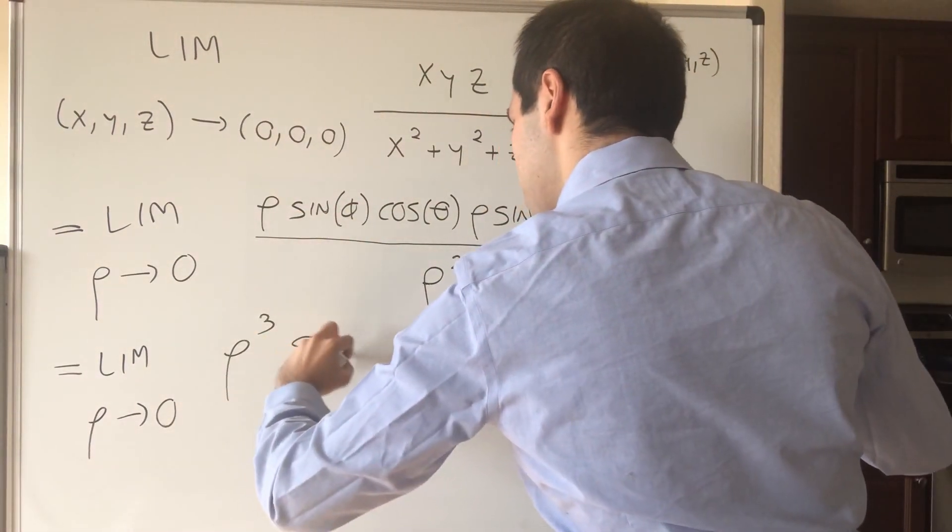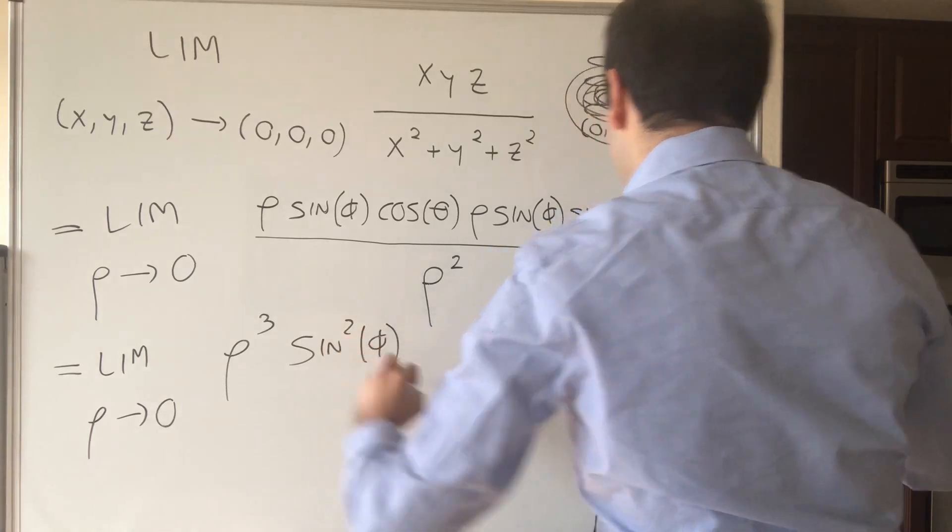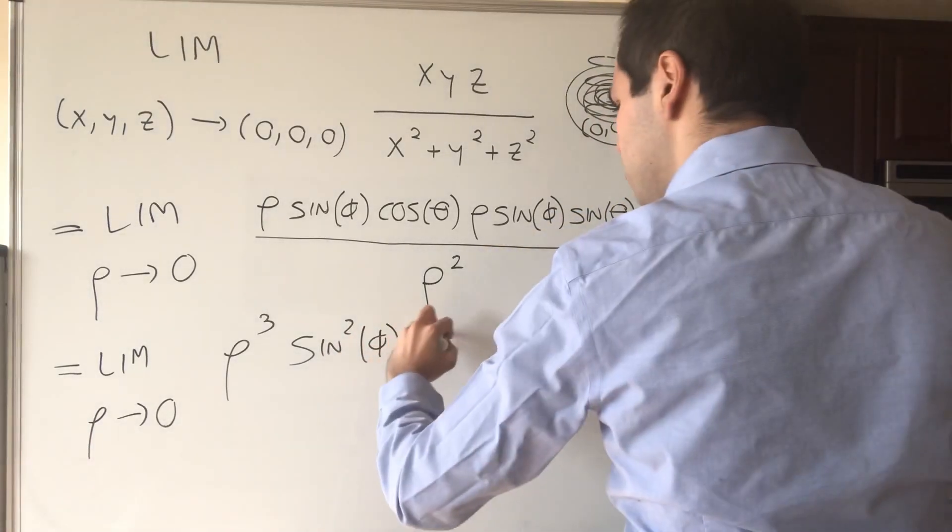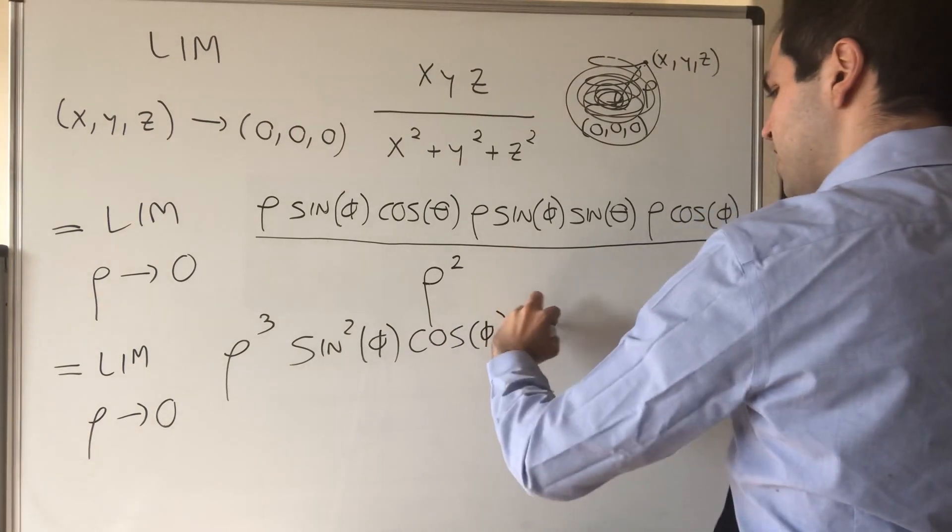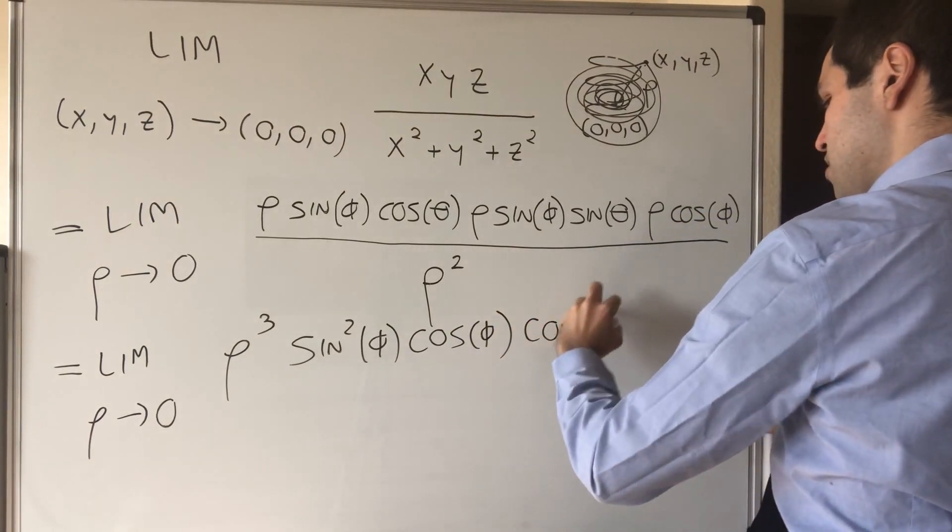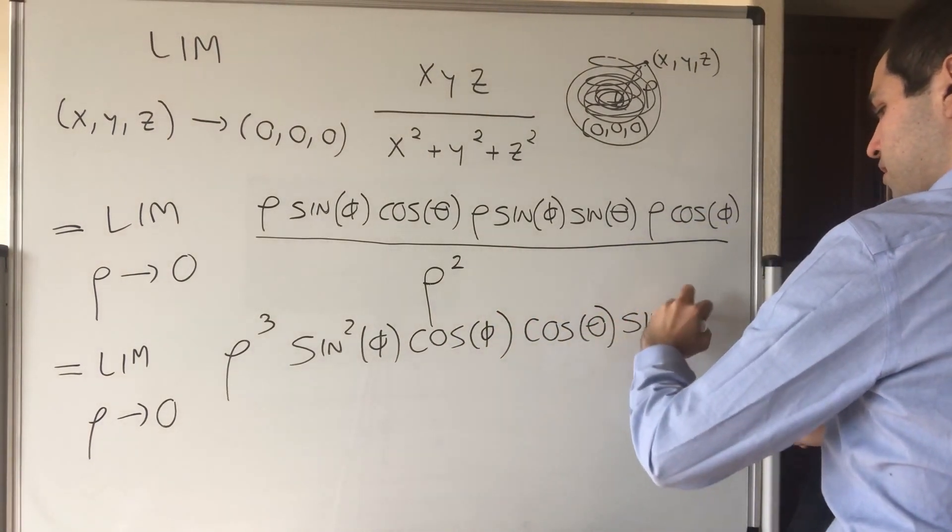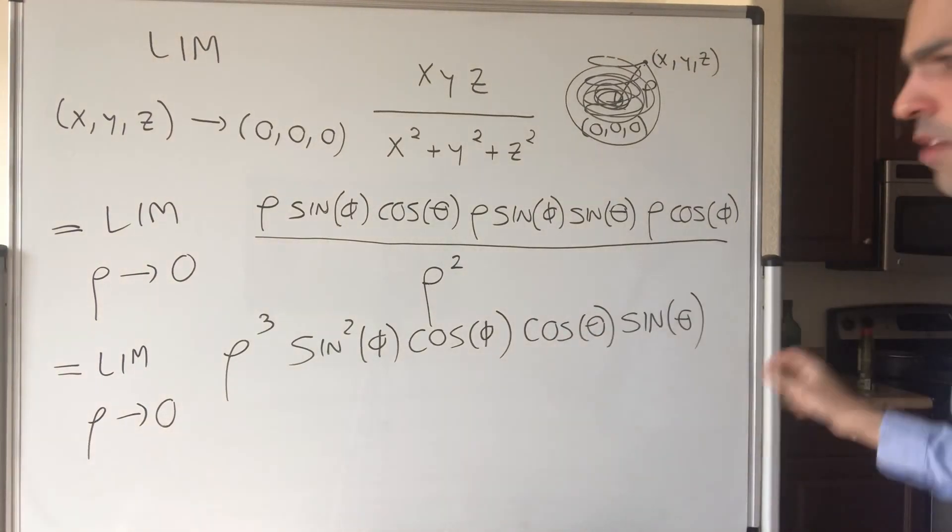So sine squared of phi. And then a cosine phi. And then cosine theta. Sine theta. And this divided by rho squared.